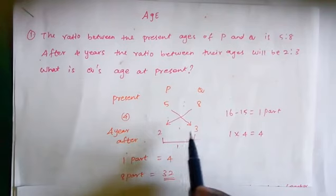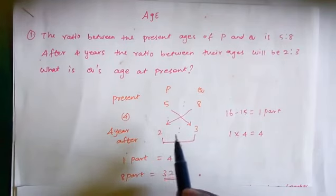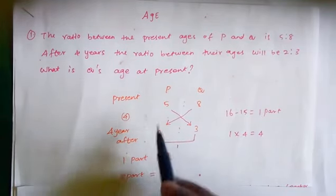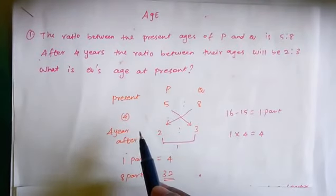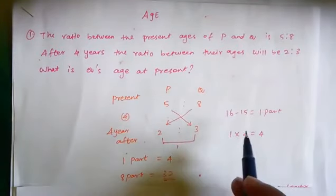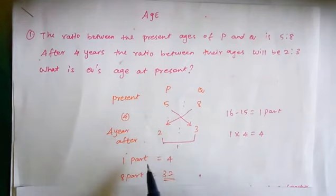Then this is the common difference. 3 minus 2 is 1. Then this is the common difference, 4. 1 part equal to 4.